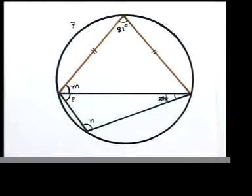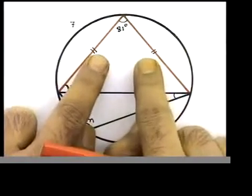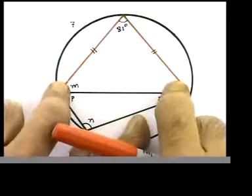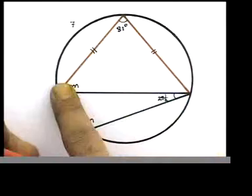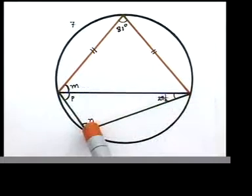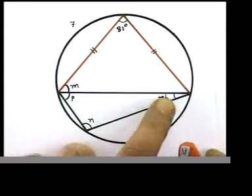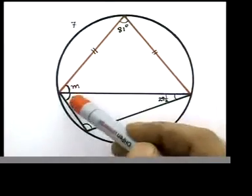Number seven. Opposite angles add up to 180. There are two equal marks — equal marks means they are equal in length, so it's an isosceles triangle. We have one more triangle at the bottom. That's P, that's M, and it's 29 and a half. If it's not clear, look into the worksheets. Our aim is to find all those missing angles.